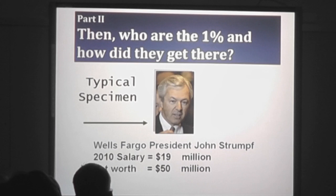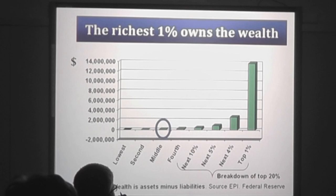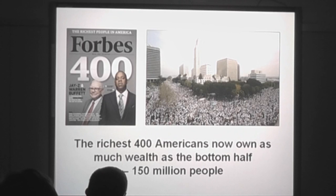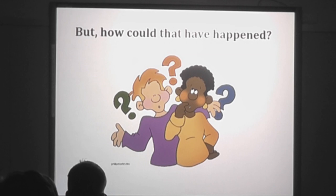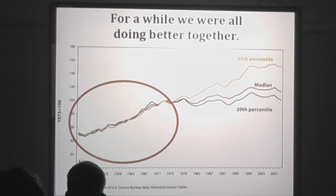He's more or less typical of who we're talking about — salary $19 million, compared to about $44,000 a year for the average family. What the middle class owns compared to what the 1% owns is absolutely astonishing. The richest 400 Americans now own as much wealth as the whole bottom half of the population — 150 million people. But how could that have happened? It wasn't supposed to happen in this country. For a while, we were all doing better together.